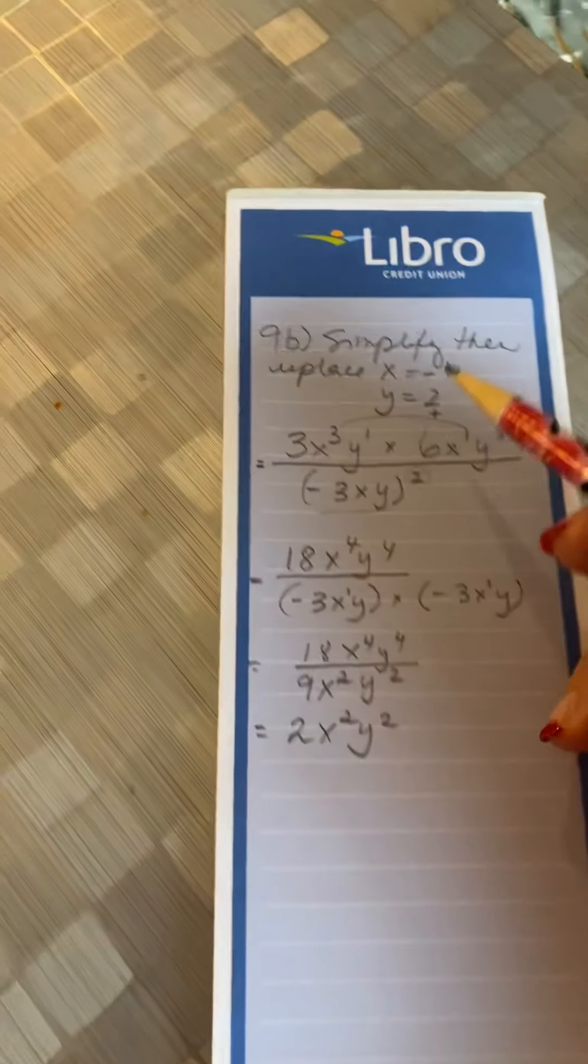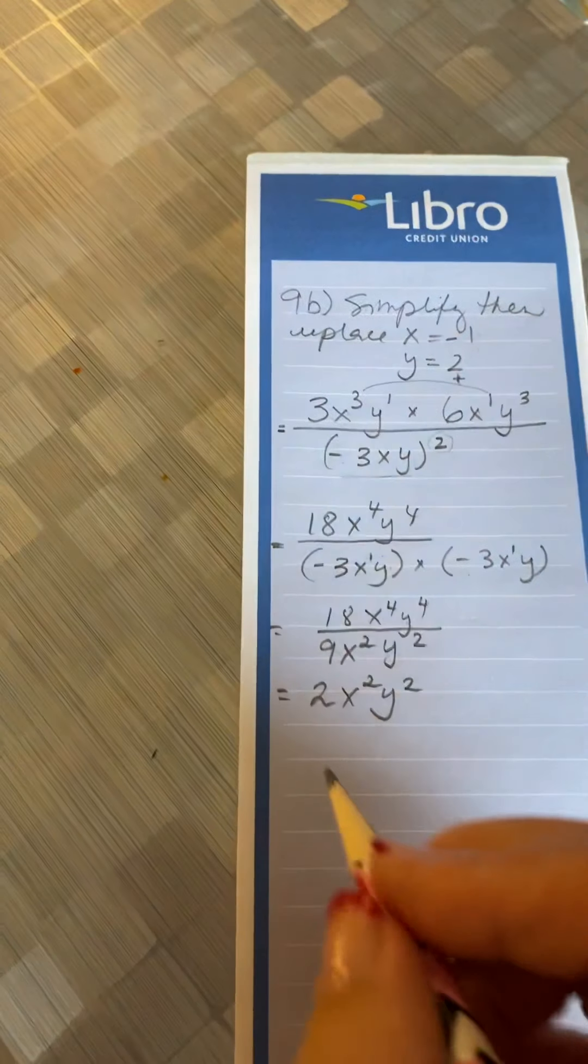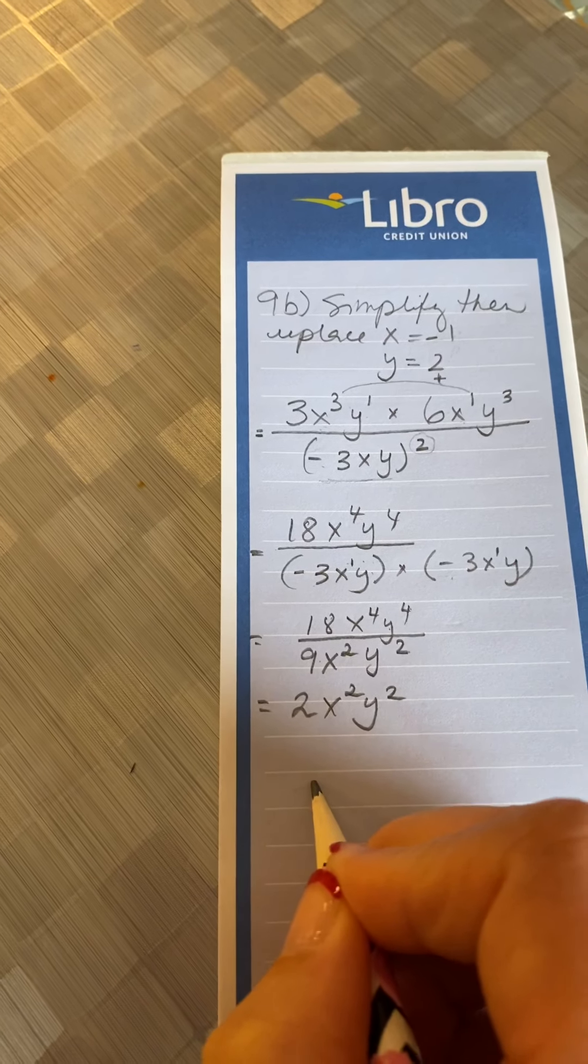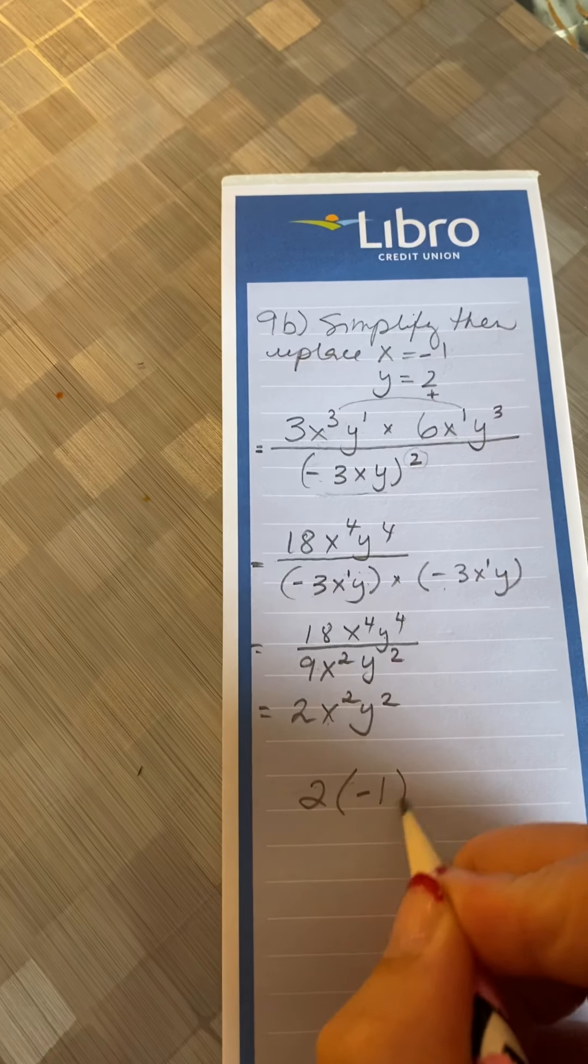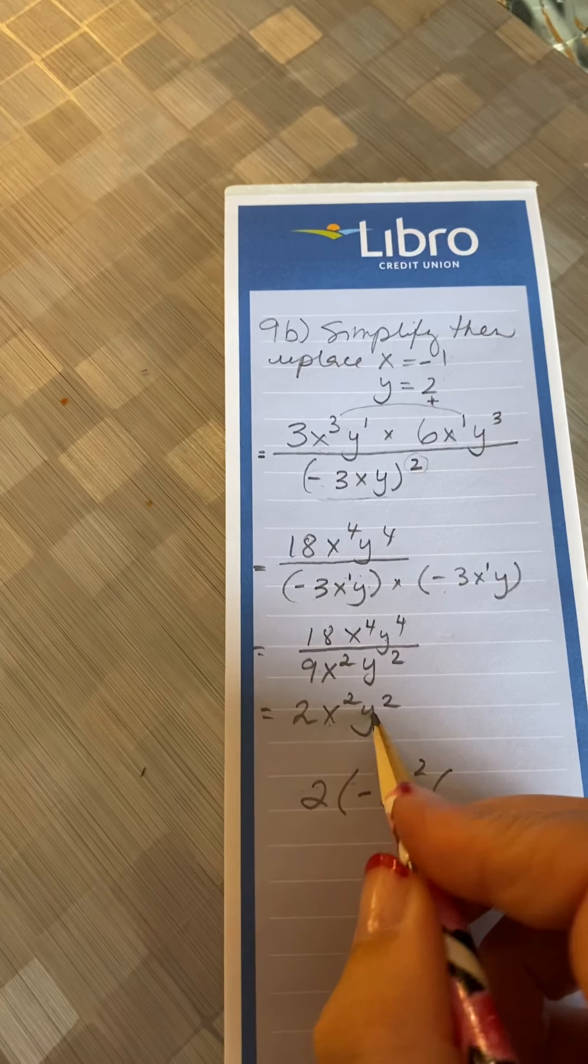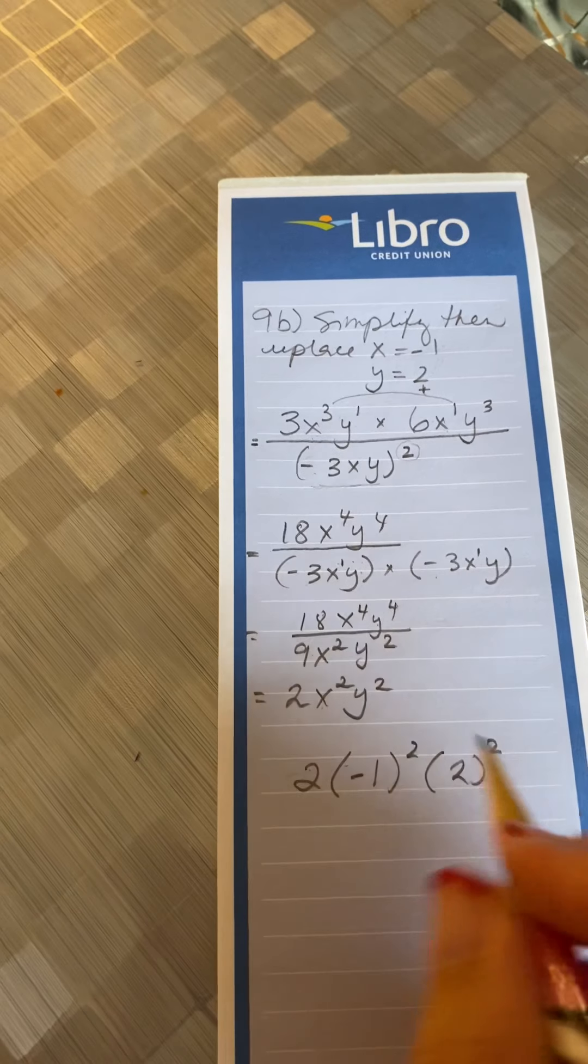Now I can use this information here, replace the x and the y with the correct values, and let's see what we get. So 2, and then I'm going to put the x in a bracket, negative 1 squared, and instead of y, I'm going to put in a 2, and that also gets squared.